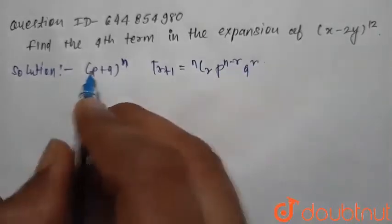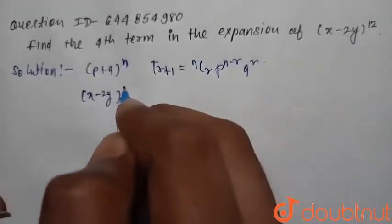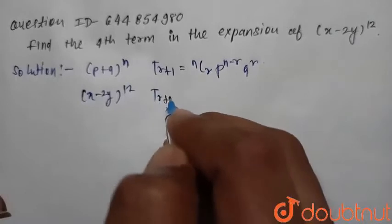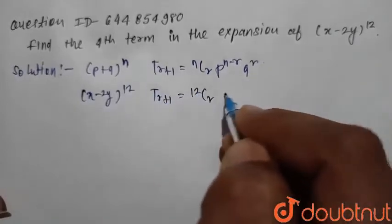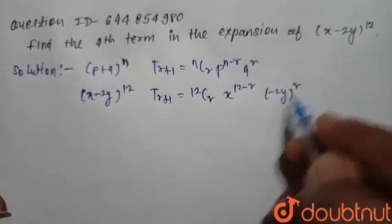Now we write the general term for this expansion (x - 2y)^12. So T(r+1) = 12Cr × x^(12-r) × (-2y)^r.